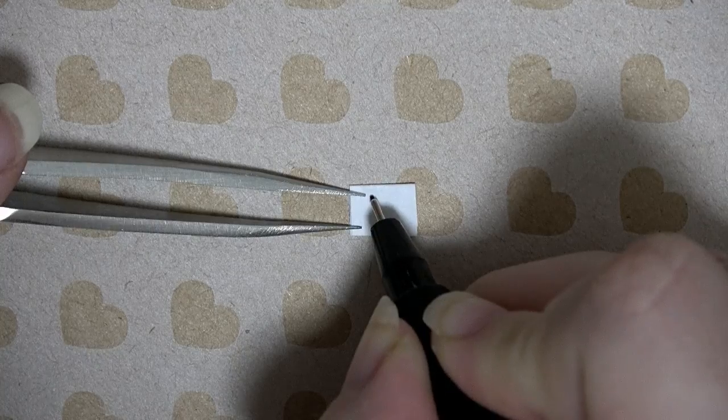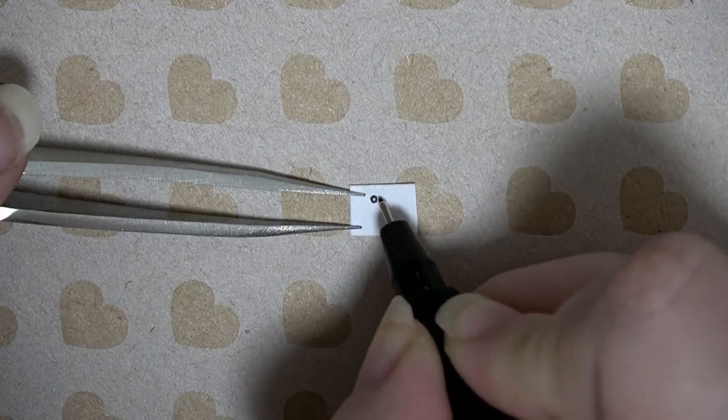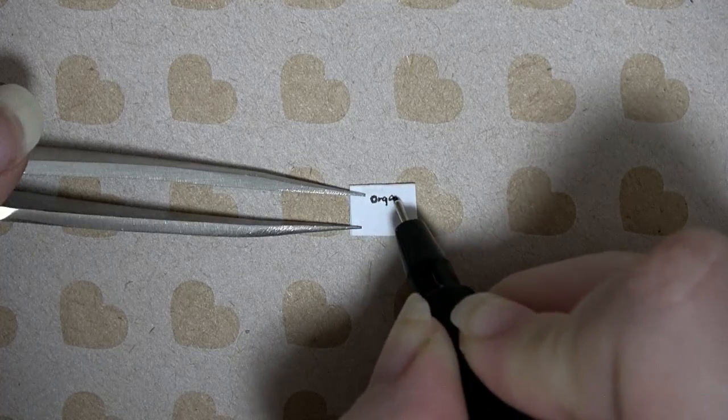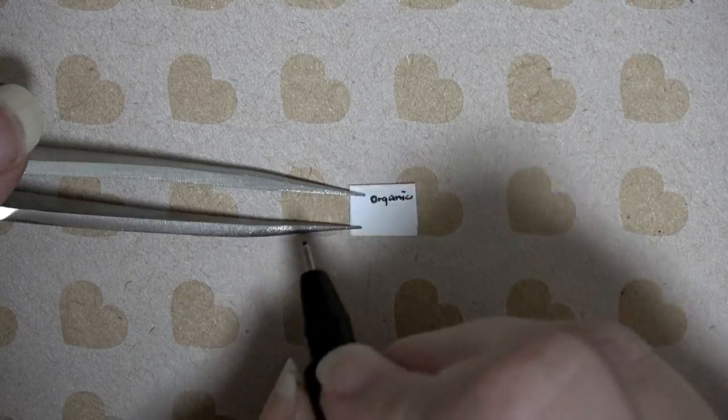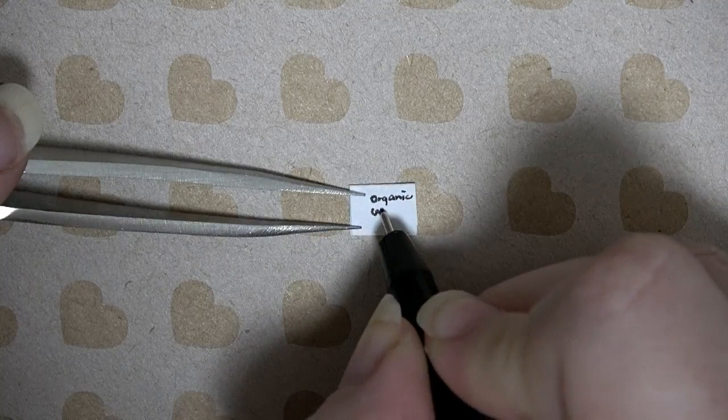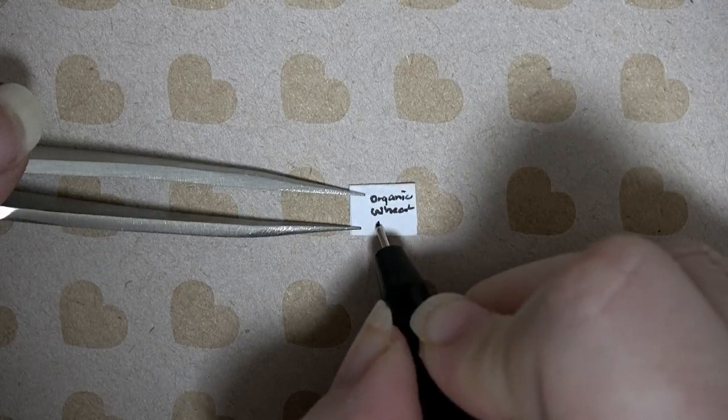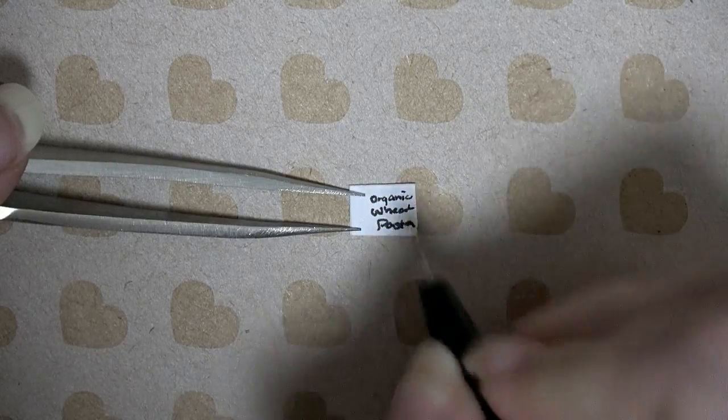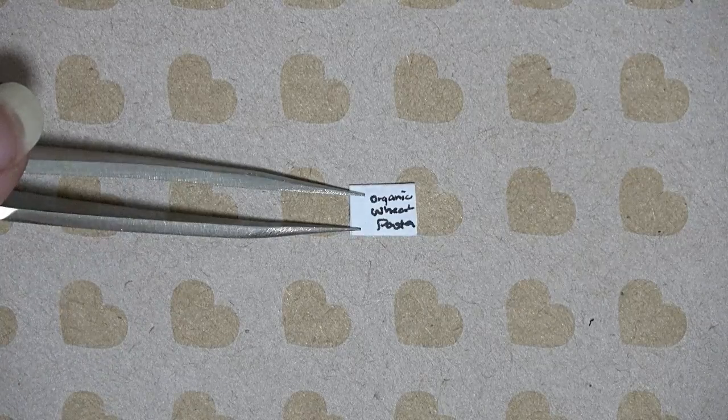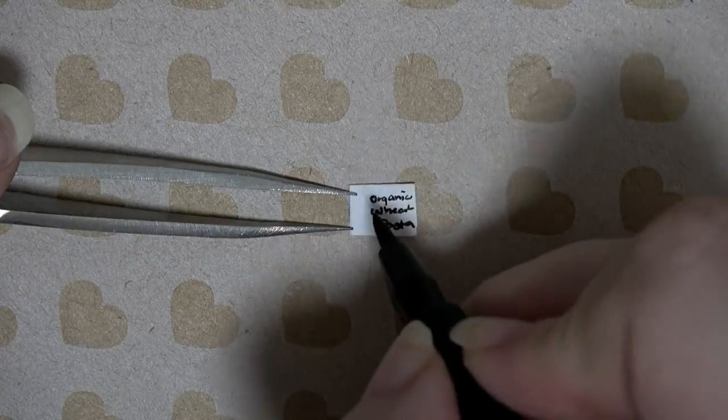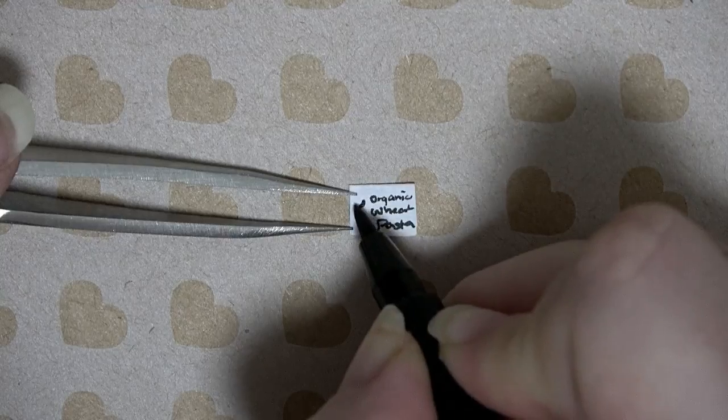For the label I used standard printer paper and hand wrote details using black ink. As this is meant to be an organic brand, the label is to appear homemade and thus neatness is not a priority. Alternatively you can print off some labels using a Google search.